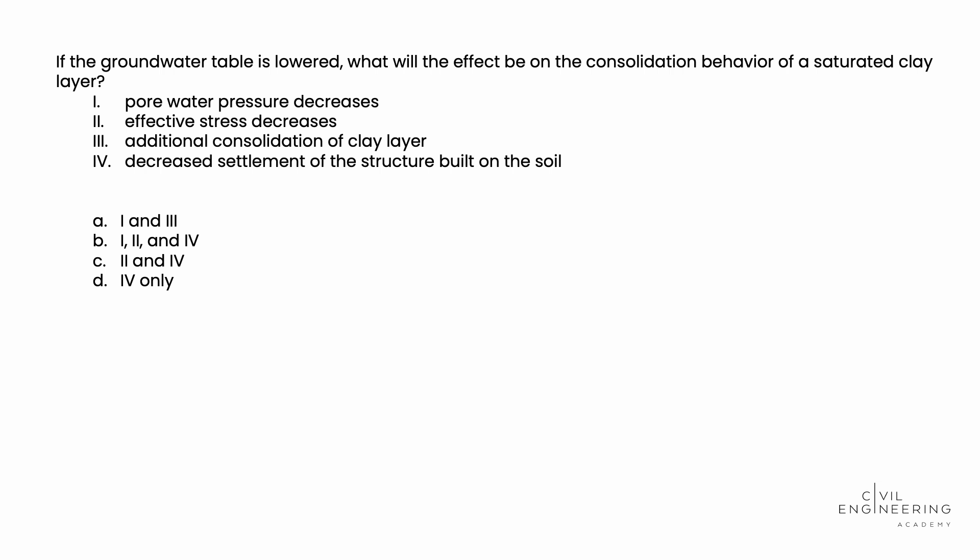If the groundwater table is lowered, what will the effect be on the consolidation behavior of a saturated clay layer? We're given four Roman numerals of effects, and we need to identify which ones are true and false. To solve this problem correctly, we need to understand that lowering the groundwater table decreases the pore water pressure.